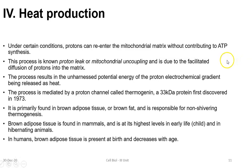The next function of mitochondria is heat production. Under certain conditions, protons can re-enter the mitochondrial matrix without contributing to ATP synthesis. This process is known as proton leak or mitochondrial uncoupling, and it generates a lot of heat. The unharnessed potential energy from the proton electrochemical gradient is released as heat, facilitated by a separate proton channel protein called thermogenin — a 33 kilodalton protein discovered in 1973.